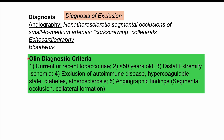Another way this condition can be diagnosed is by the Olin diagnostic criteria. This includes: one, current or recent tobacco use; two, patients less than 50 years of age; three, distal extremity ischemia; four, exclusion of autoimmune diseases, hypercoagulable states, diabetes, and atherosclerosis; and five, angiographic findings like segmental occlusion or collateral formation.